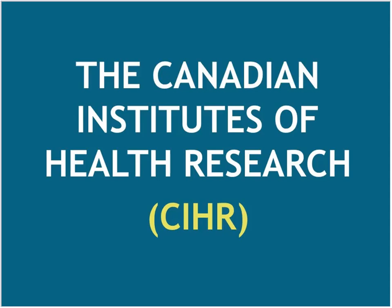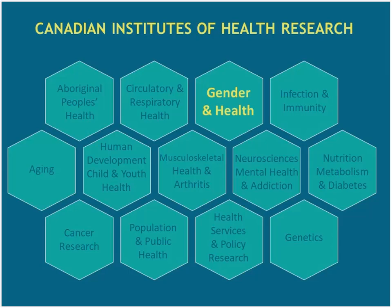I am from the Canadian Institutes of Health Research. If you are a health researcher, you've surely heard of us. If not, we are the Canadian government organization that funds health research. CIHR is made up of 13 institutes that fund research into strategic priority areas for Canadians. We are the Institute of Gender and Health, though it's important to understand that's a bit of a misnomer — we should perhaps be called the Institute of Sex, Gender and Health. If you don't know the difference between sex and gender, I will explain that in a moment.